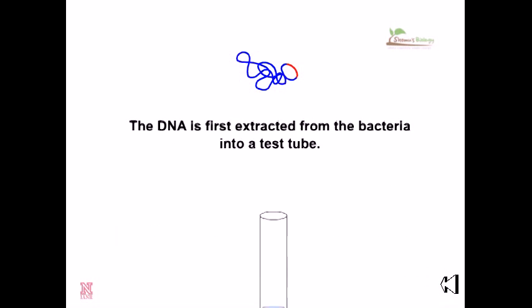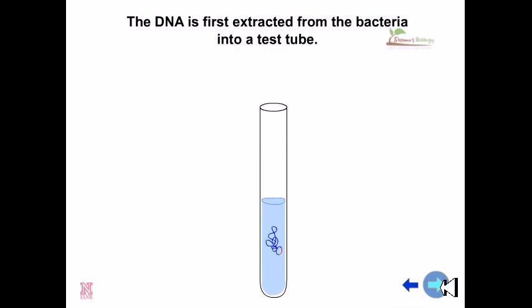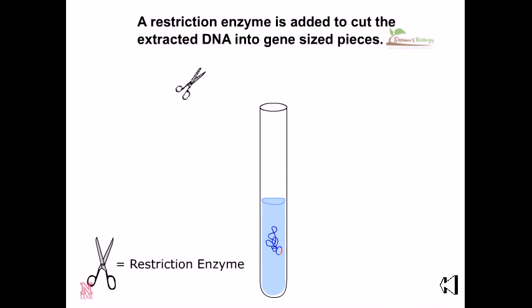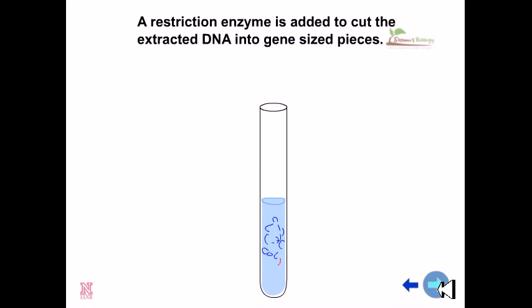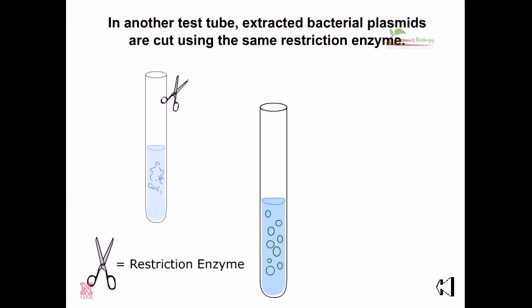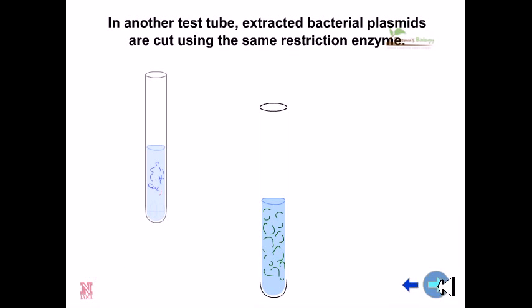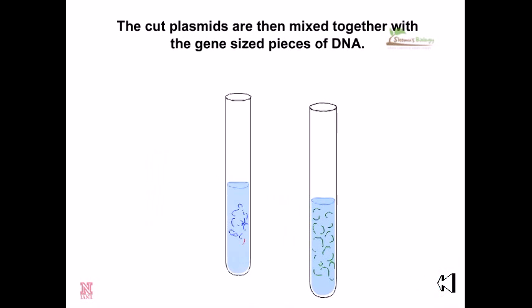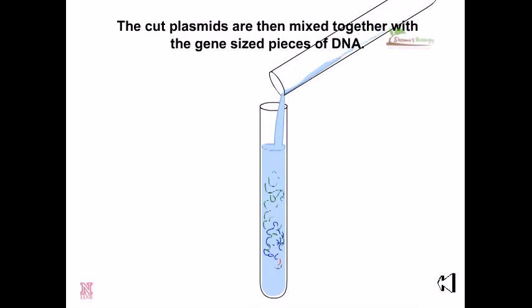The DNA is first extracted from the bacteria into a test tube using extraction techniques. A restriction enzyme is added to cut the extracted DNA into gene-sized pieces. In another test tube, extracted bacterial plasmids are cut using the same restriction enzyme, because the restriction enzyme cuts at a particular specific location, allowing attachment with another gene segment.